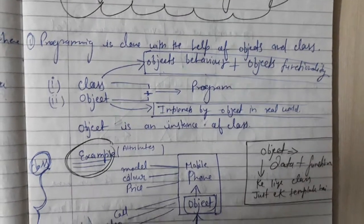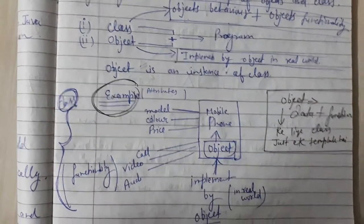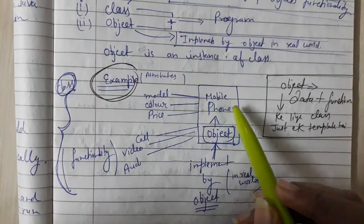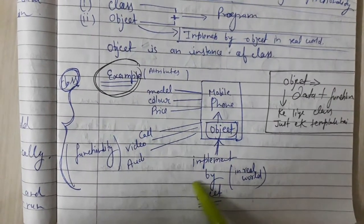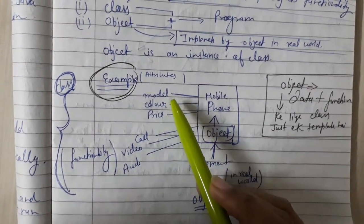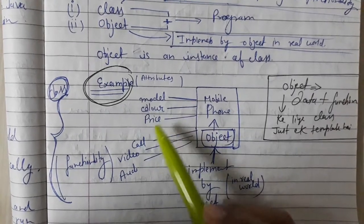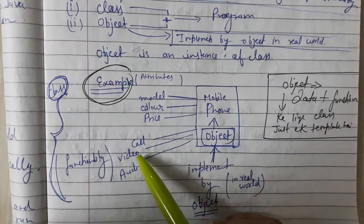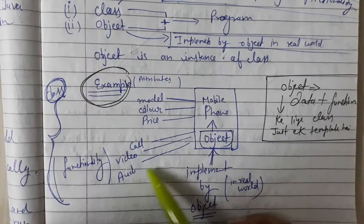We have an example: we have an object mobile. Mobile functionality will come into the class. Model, color, price - what are the calling features, video calling features, audio features.